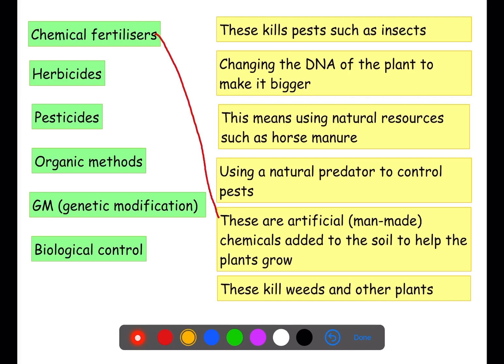Herbicides — the ending '-cide' means to kill. Herbicide is used to kill plants, so these are chemicals used to kill weeds and other plants that are not required. Pesticides kill pests such as insects.